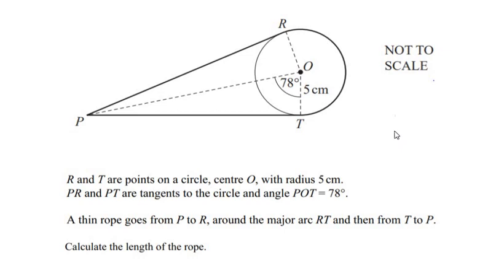Hello and welcome to my channel. In this video we are going to solve an example which is a combination of trigonometry and mensuration. R and T are points on a circle with center O and radius 5 centimeters. PR and PT are tangents to the circle and angle POT is 78 degrees. A thin rope goes from P to R, the major arc R to T, and then from T to P. We have to calculate the length of the rope by finding PR, the major arc RT, and PT, then adding them together.